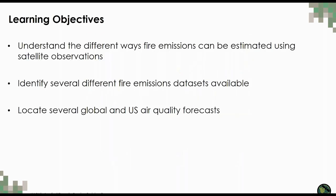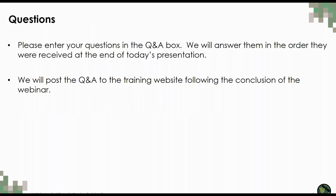In today's session, we're going to understand the different ways fire emissions are estimated using satellite observations. We'll also identify several different fire emissions datasets that are readily available, and locate several global and U.S. air quality forecasts. If you have questions during today's presentation, please enter them in the Q&A box. We'll answer them in order at the end of the presentation, and post the Q&A document to the training website following the webinar.